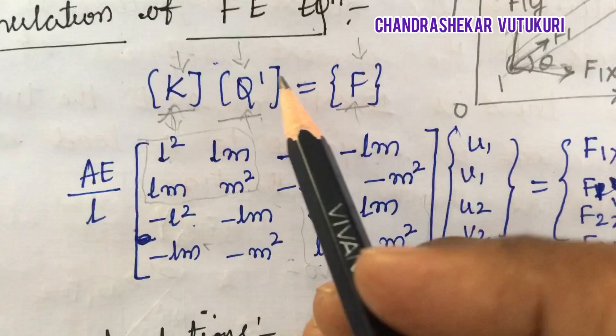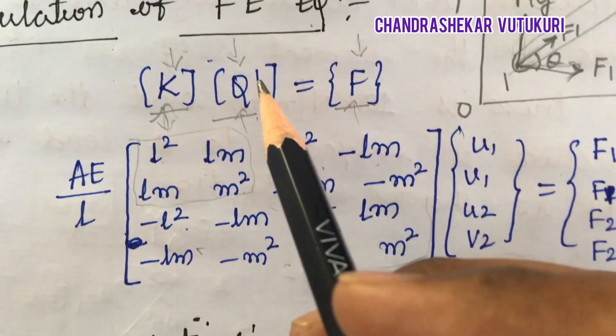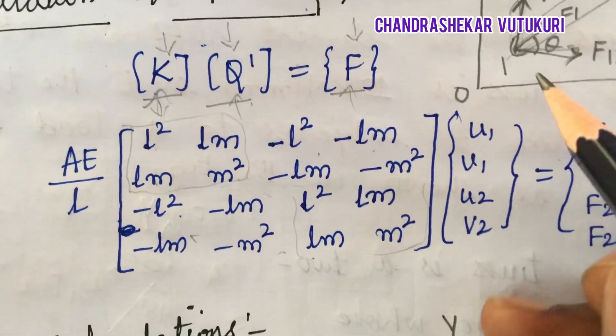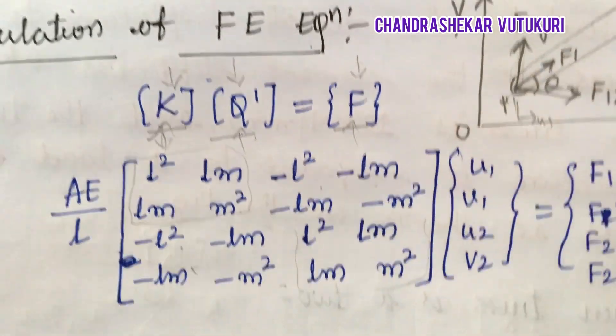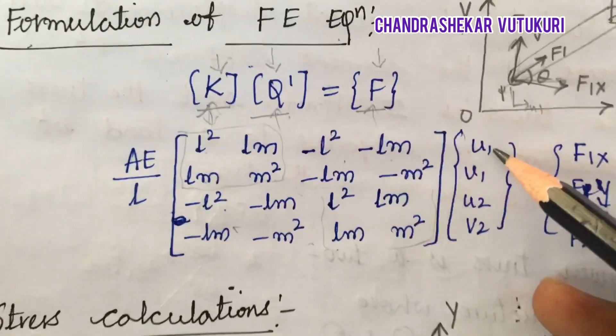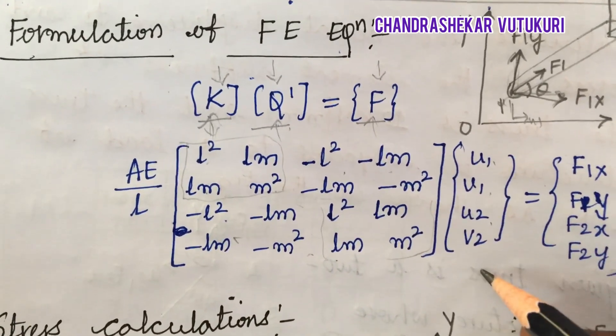Q dash is the global coordinate system displacements. They are nothing but what we have discussed - this is u1 v1 displacement and u2 v2 is the displacement at node 2.